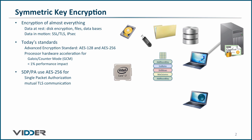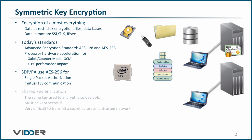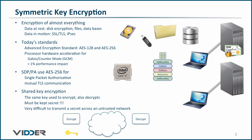The software-defined perimeter and precision access use AES-256 symmetric key encryption for single packet authorization and for mutual TLS communication from the clients to the controllers and gateways, and between the controllers and gateways. It is important to note that symmetric key encryption is shared key encryption, which means the same key used to encrypt a message is also used to decrypt it. Therefore, the key must be kept secret, and it is very difficult to transmit a secret across an untrusted network.